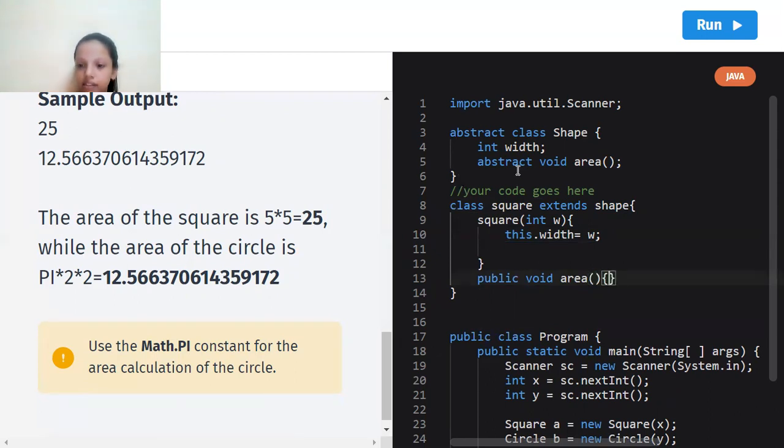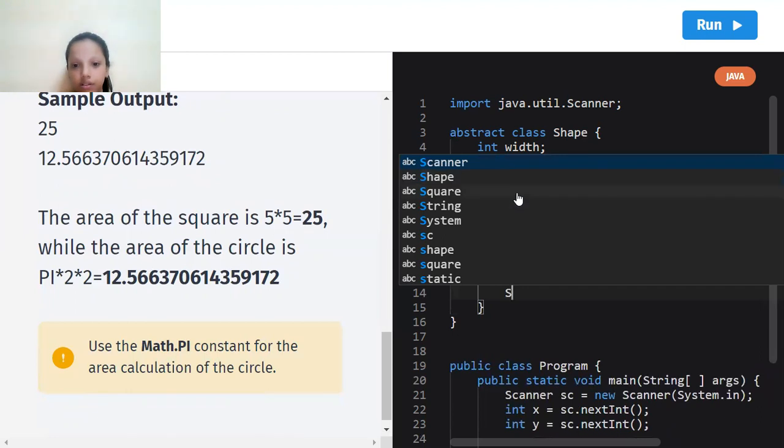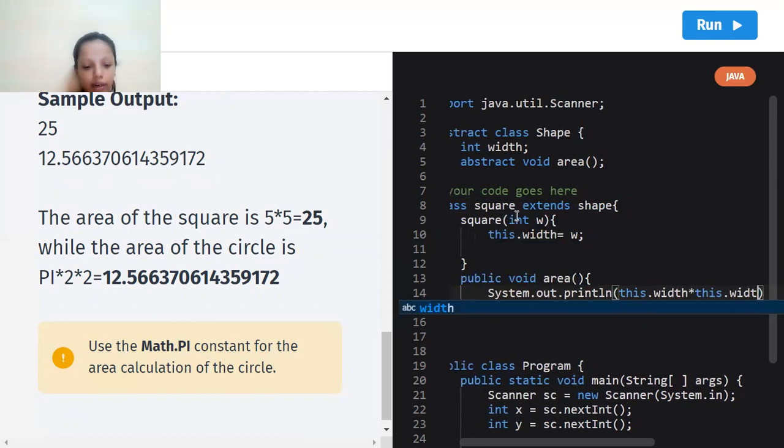Nothing inside the brackets. Another curly brace and let's go down. So System.out.println because we're going to print the main part of the class Square. So System.out.println, and that will be this dot width star, which means multiplied by, this dot width.